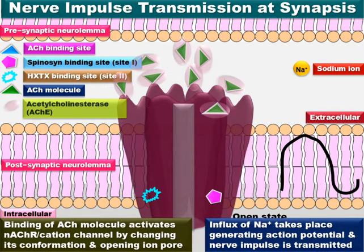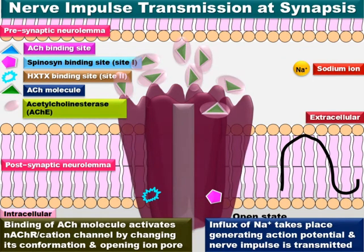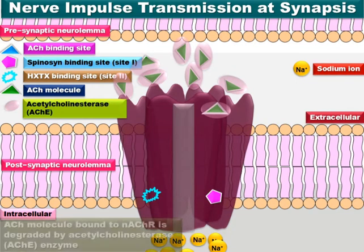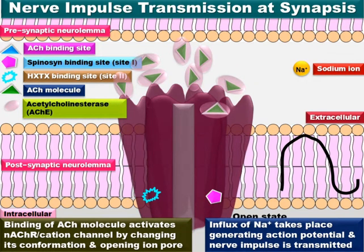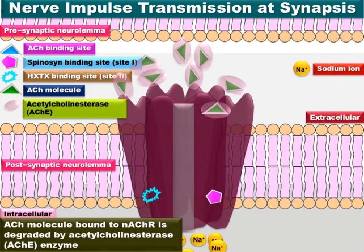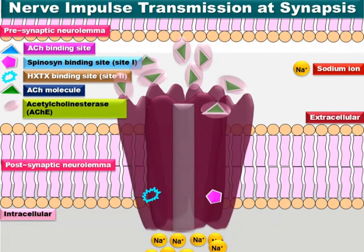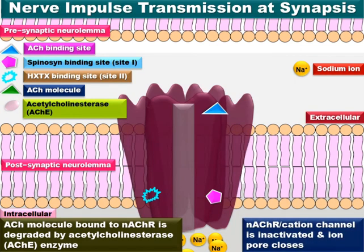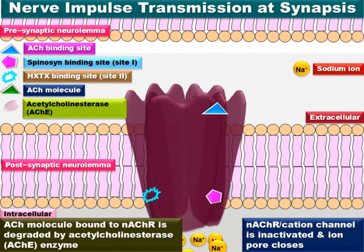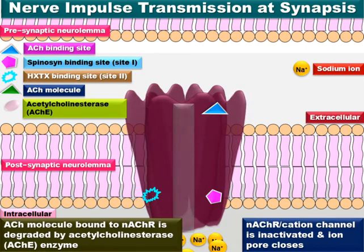Once the nerve impulse is transmitted, the presynaptic membrane releases the acetylcholinesterase enzyme into the synapse. The acetylcholinesterase enzyme occupies its catalytic site with the acetylcholine molecules — both those free in the synapse and those bound to the nicotinic acetylcholine receptor — and breaks them down into acetic acid and choline. The degradation of acetylcholine bound to the receptor inactivates the nicotinic acetylcholine receptor cation channel, and subsequent conformational changes close the ion pore, stopping sodium ion influx.